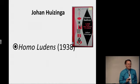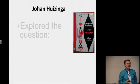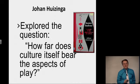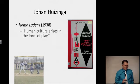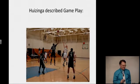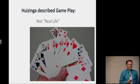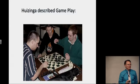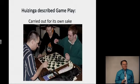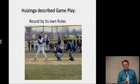When he published Homo Ludens in 1938, he considered it a history book, not a science book — he was a historian, not a scientist. He explored the question: how far does culture itself bear the aspects of play? He said that human culture arises in the form of play. He described gameplay as a free and meaningful activity that was not real life, carried out for its own sake, and bound by its own rules. As we learned in week two, games must have rules.